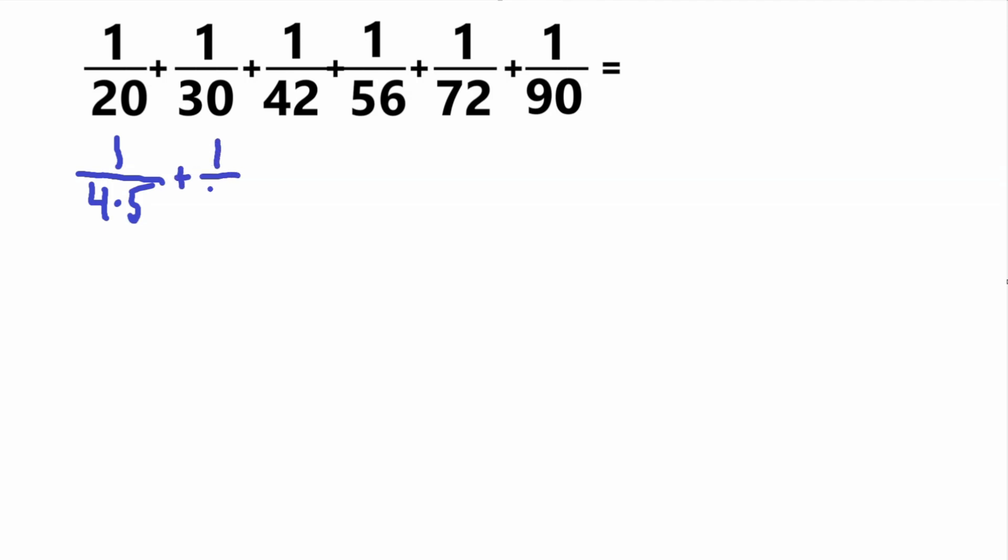So 1 over 30, 30 can be written as 5 times 6. And what is 42? 42 can be written as 6 times 7. So are you starting to see a pattern here? 56 will be, you've probably already guessed it, 7 times 8. 72 will be 8 times 9. And 90 will be 9 times 10. So we have our fractions rewritten like this, and you can see there's a pattern here.